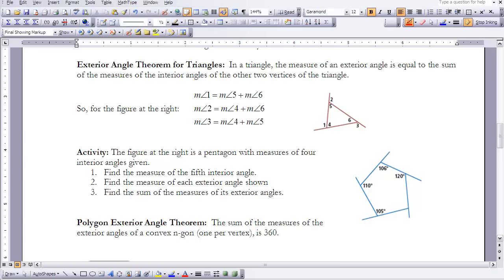In the next activity, at the right is a pentagon with measures of four interior angles. I want you to stop the video and find the measure of the fifth interior angle, find the measure of each exterior angle shown, and then find the sum of the measures of its exterior angles. Start the video when you are ready.